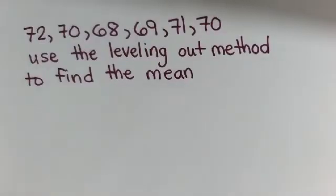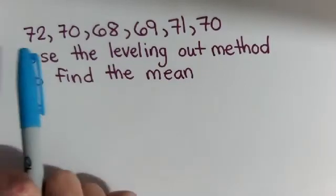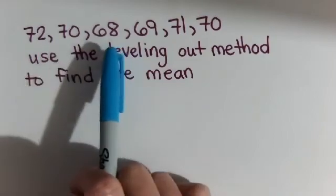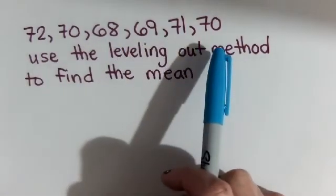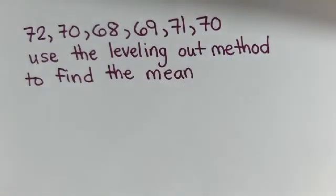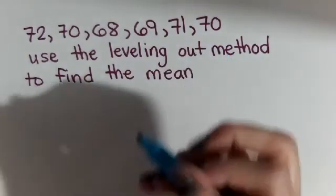All right, so using the same idea of the leveling out method to find the mean, we can easily find the mean of this data: 72, 70, 68, 69, 71, and 70 by borrowing from one group.